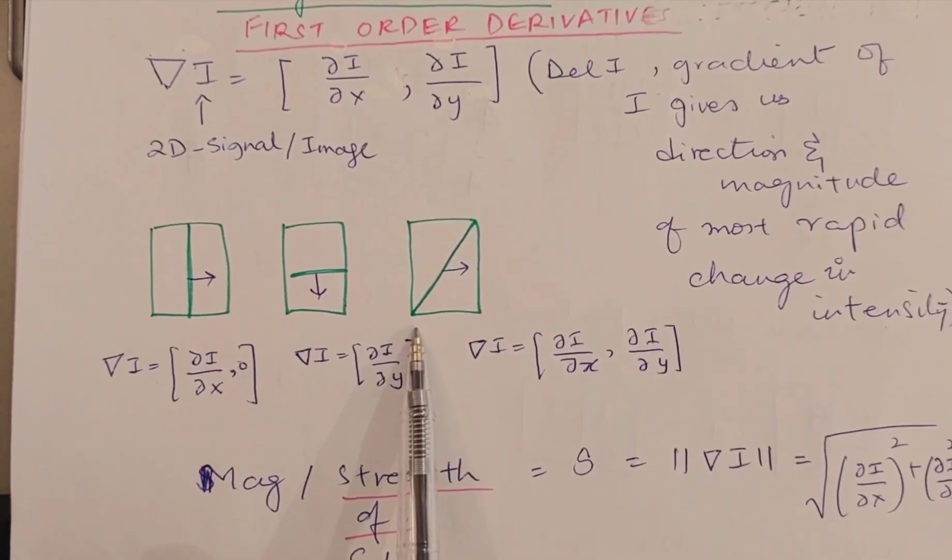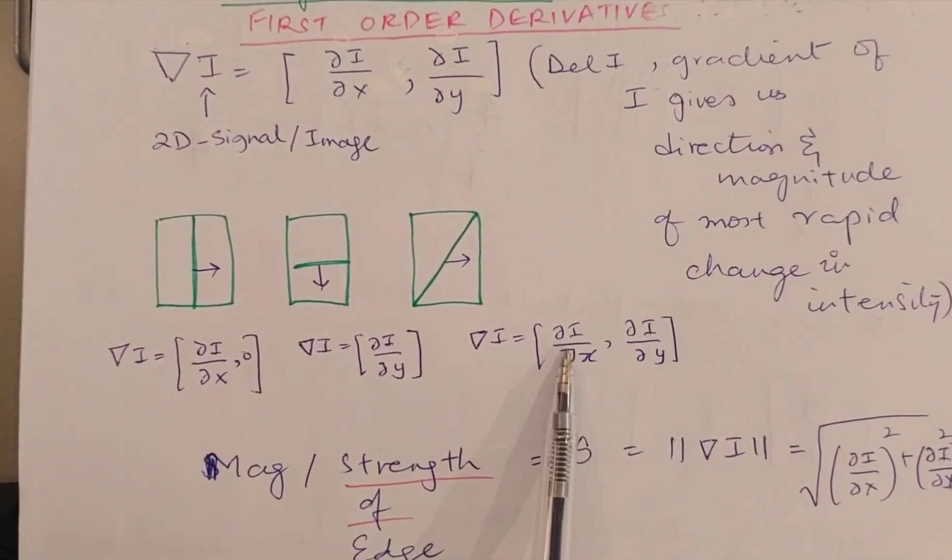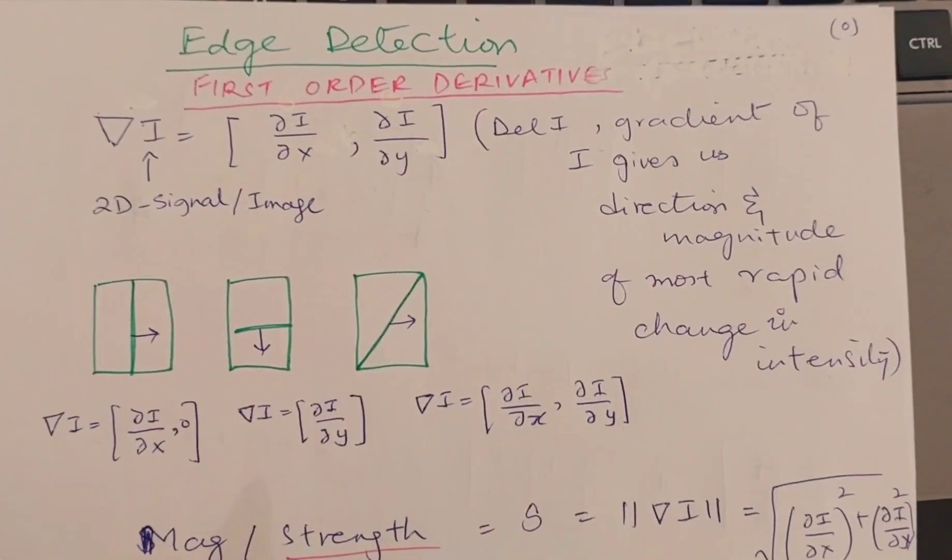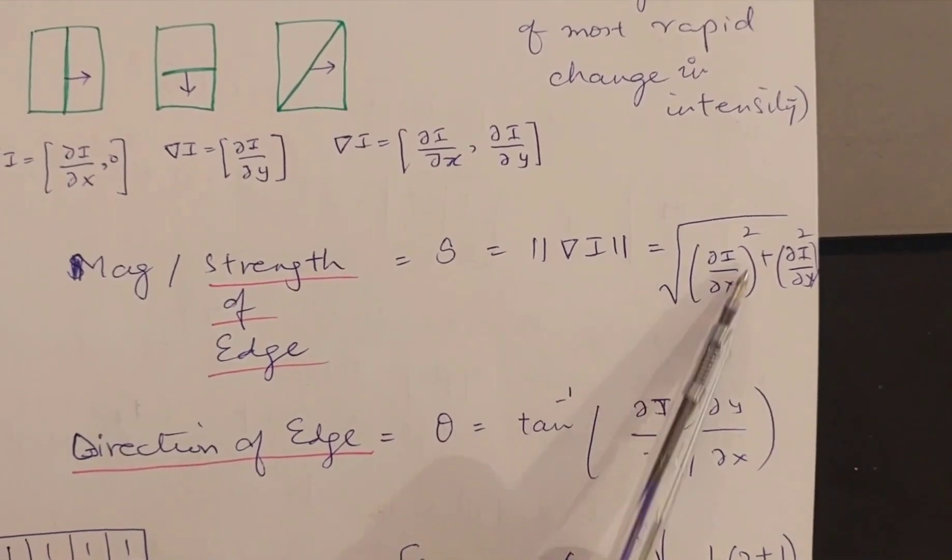The strength of the edge is calculated with the help of sum of these two gradients whole under the root, and the direction of edge is calculated with tangent inverse of Iy and Ix.